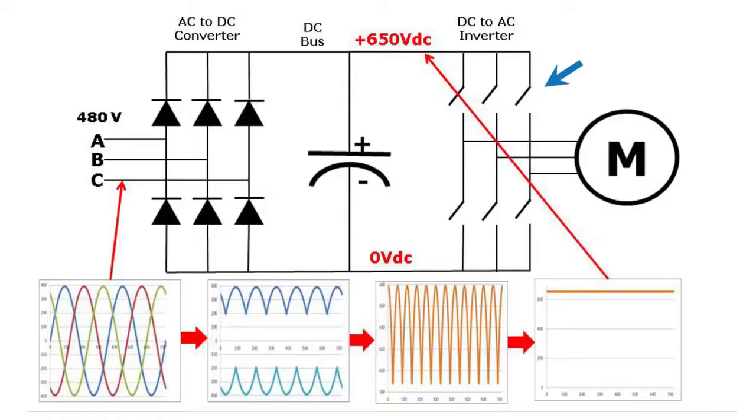Then going to the right, we see six switches. These six switches compose the DC to AC inverter, or just inverter for short. So by switching these switches on and off, we can create any frequency that we like, and that frequency will regulate the speed that the motor goes.